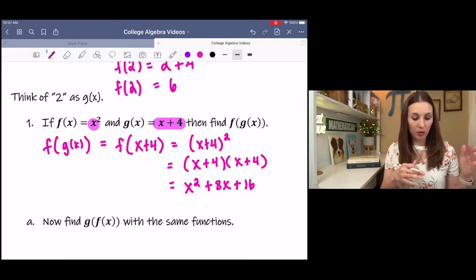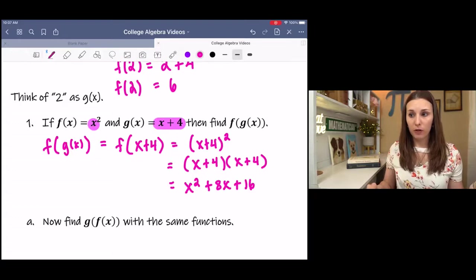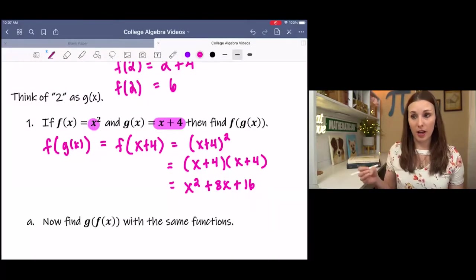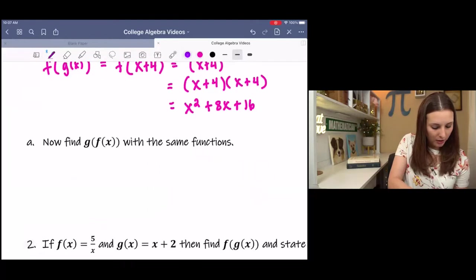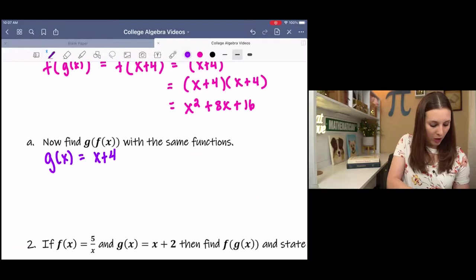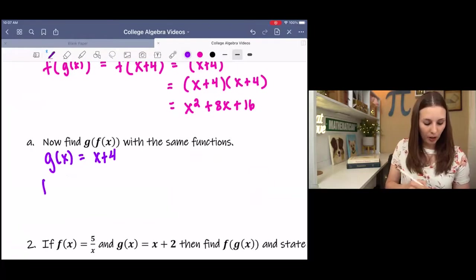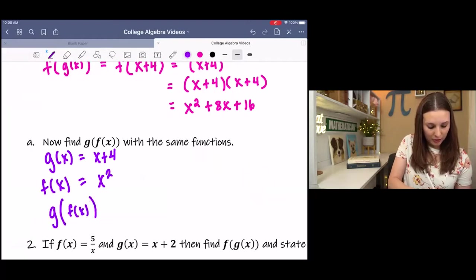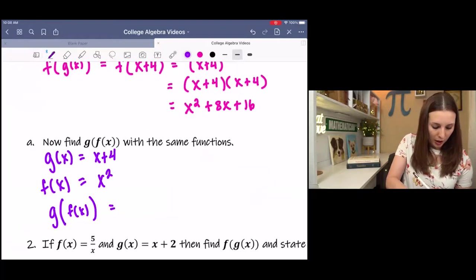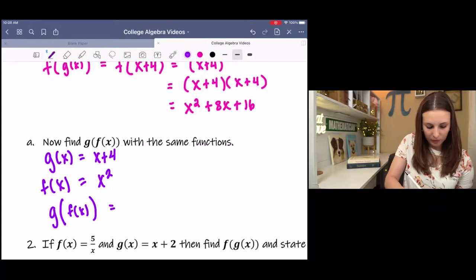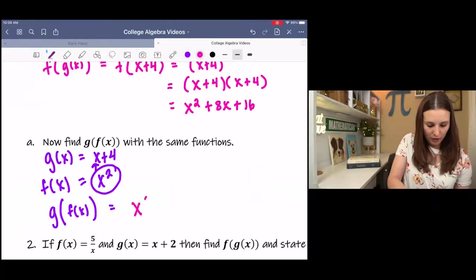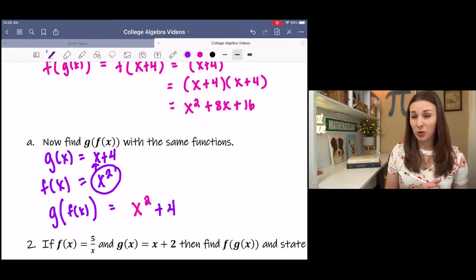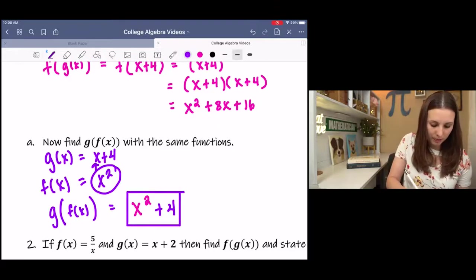We can also go the other way, find g of f of x with the same exact functions. We know that g of x is x plus 4, and we know f of x is x squared. So if we're finding g of f of x, then that means we're plugging f of x into g. I'll change this color. So f of x gets plugged into g of x. And there's no simplifying we can do here, so this would be complete. Not so hard, right?